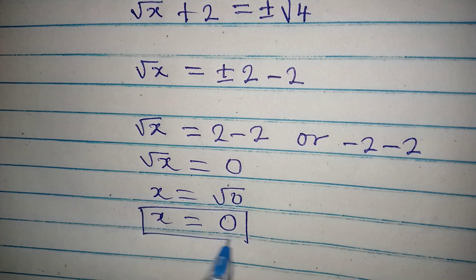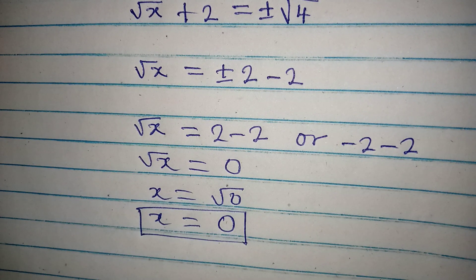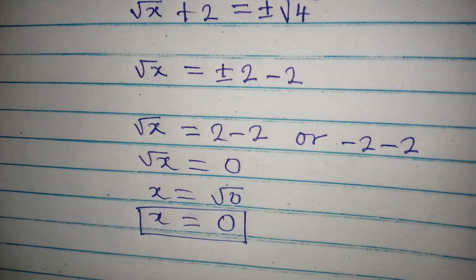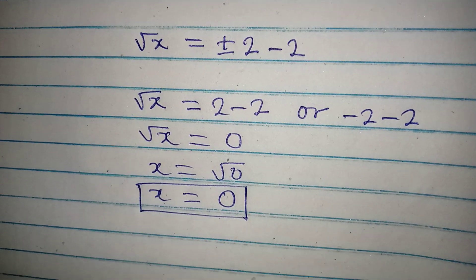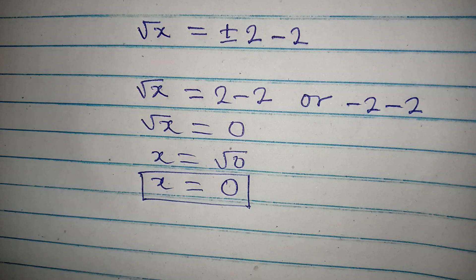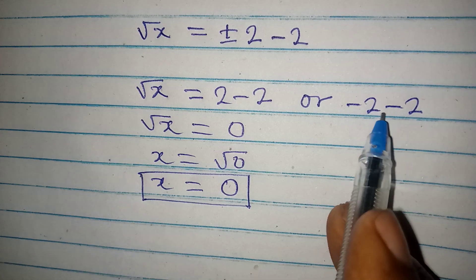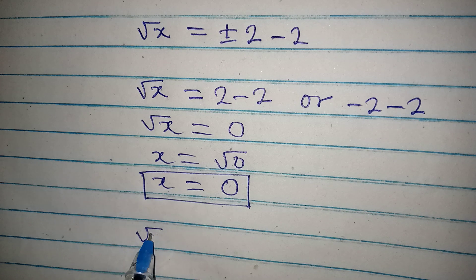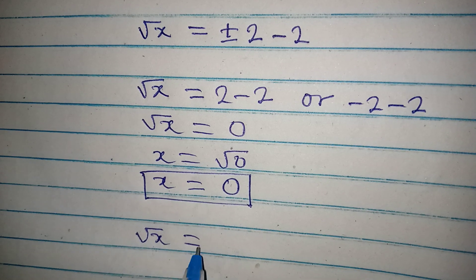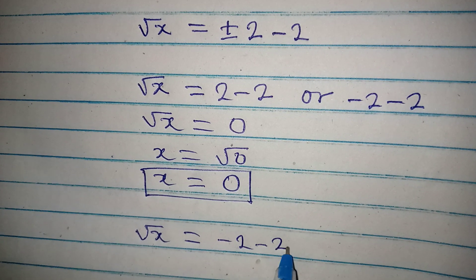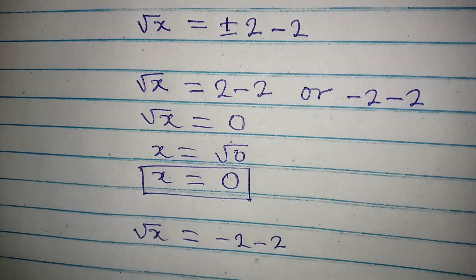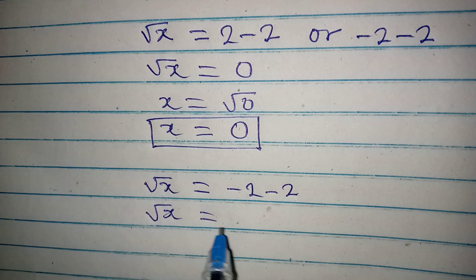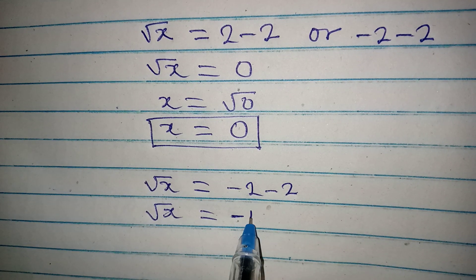That is the first value of x. To get the next value of x, we take the second case: square root of x equals minus 2 minus 2, which means square root of x is equal to minus 4.